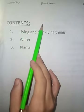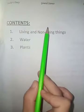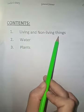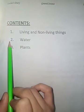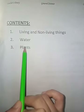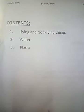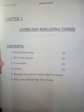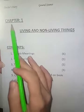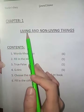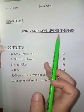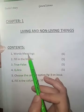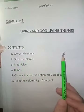Then on the next page write the contents of the chapter. We have three chapters in our midterm course: number one is Living and Non-Living Things, chapter two is Water, and chapter three is Plants. Then on the next page write Chapter 1: Living and Non-Living Things contents.